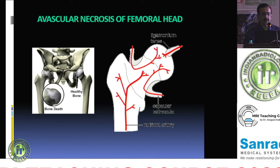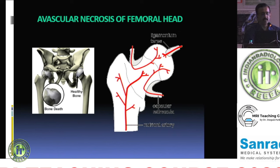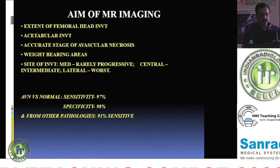Intracapsular fractures of the neck of the femur are also very susceptible to AVN later on, because the arterial supply is cut off at the time of fracture. This makes AVN of the femoral head the commonest and most well-known AVN in the body.